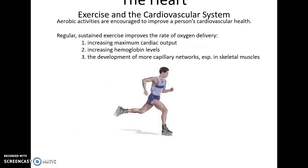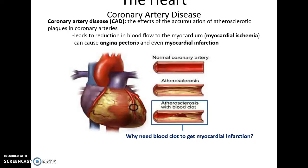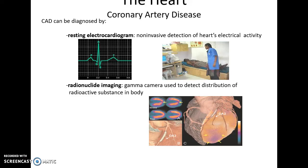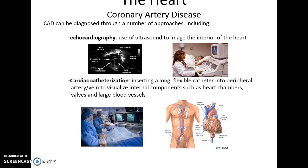Coronary artery disease is often caused by atherosclerosis — plaque building up in the arteries, causing them to narrow. If a blood clot develops, it could cause a blockage leading to a myocardial infarction or stroke. It can be diagnosed through a resting electrocardiogram, which is a non-invasive way to check electrical activity of the heart; radionuclide imaging, which sends radioactive materials into the bloodstream; echocardiogram, which uses sound waves to look inside the heart; or cardiac catheterization, which sends a small camera up into the heart through blood vessels. Coronary artery bypass surgery or coronary angioplasty can be used to correct the issue.